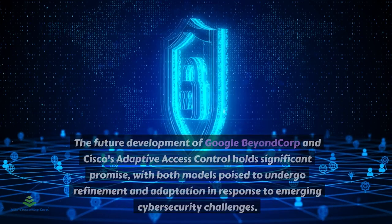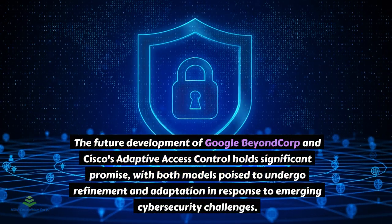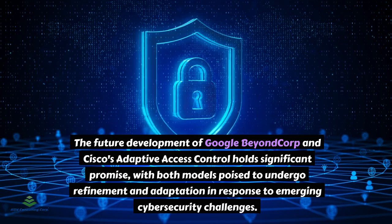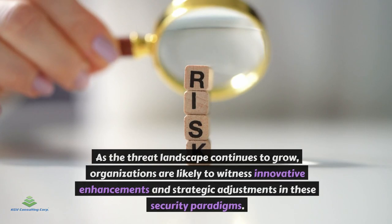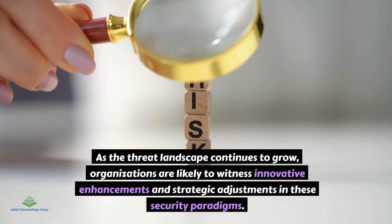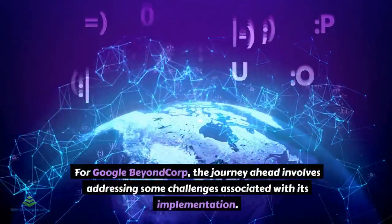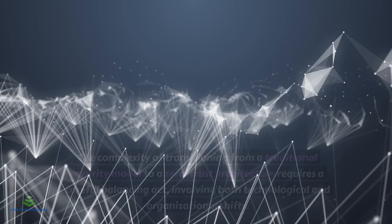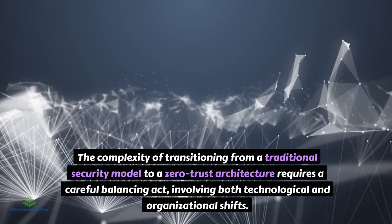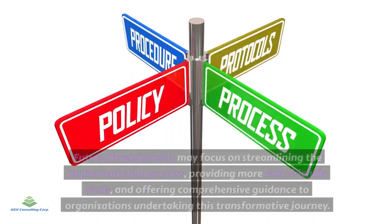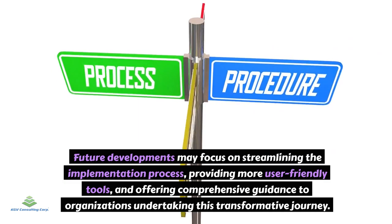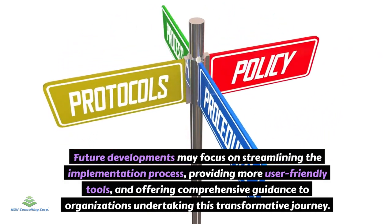The future development of Google BeyondCorp and Cisco's Adaptive Access Control holds significant promise, with both models poised to undergo refinement and adaptation in response to emerging cybersecurity challenges. For Google BeyondCorp, the journey ahead involves addressing challenges associated with its implementation. The complexity of transitioning from a traditional security model to a zero-trust architecture requires a careful balancing act involving both technological and organizational shifts. Future developments may focus on streamlining the implementation process, providing more user-friendly tools, and offering comprehensive guidance to organizations undertaking this transformative journey.